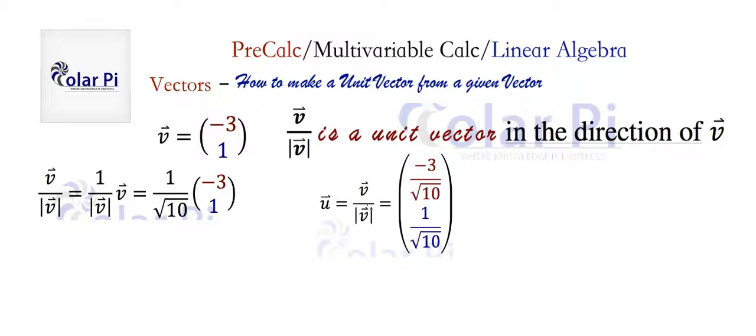So here, this vector, the unit vector in the direction of V, we have chosen to rename U, and you'll see why I wanted to rename it U. But yeah, it's going to be this here. You do the scalar multiplication here, and then you get here.